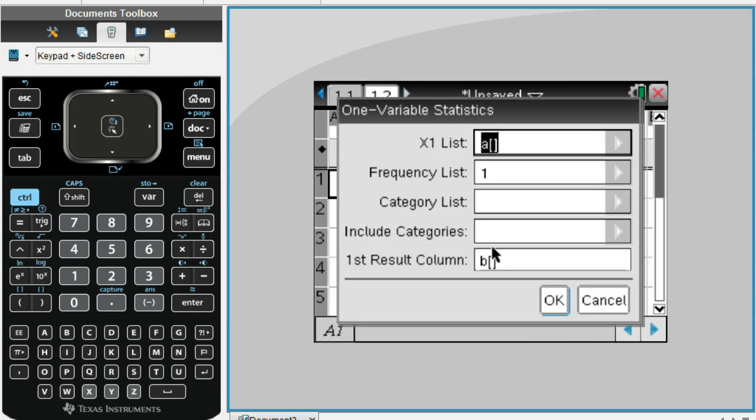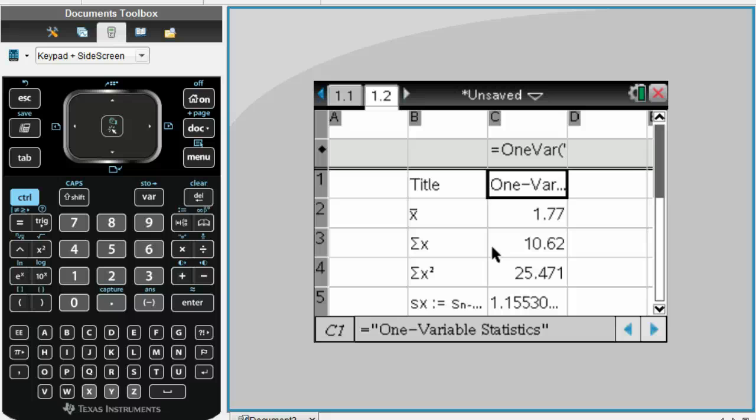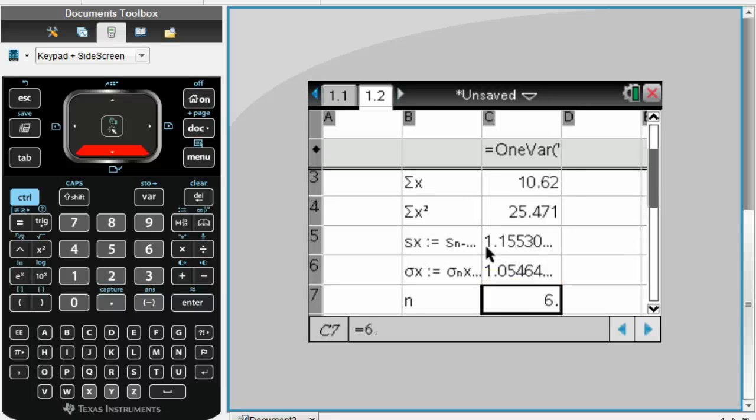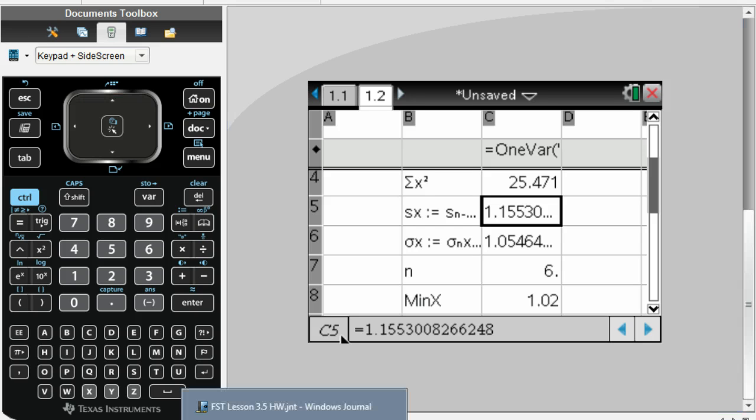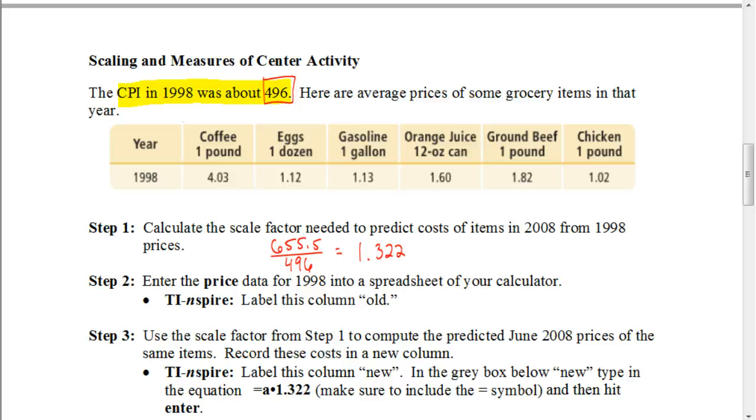We want this X1 list. We want that list to be referring to our old set of data. Now you should have a screen that looks like this. And if we go back to our notes, what I want you to do now is I want you to take some time to fill in those different pieces that we have in our note sheet.